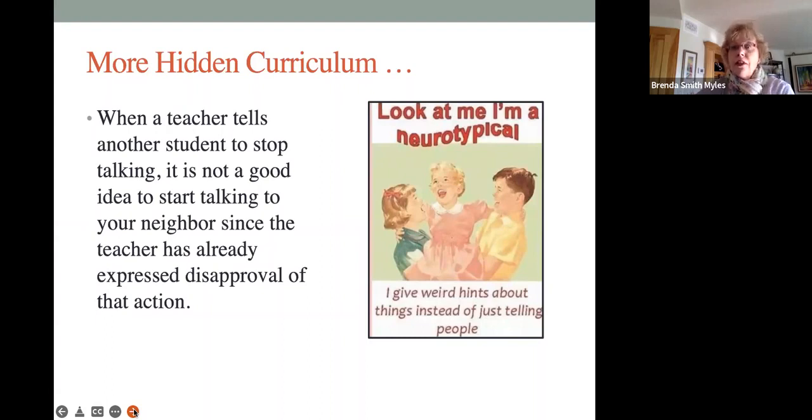When a teacher tells another student to stop talking, it's not a good idea to start talking to your neighbor since the teacher has already expressed disapproval of that action. Now, this is a tricky one. The teacher says, Molly, stop talking. Now, what does the teacher really mean? The teacher really means everyone stop talking. But our child, who is not named Molly, may continue talking or start talking. And then he gets in trouble. And what does he think? He thinks, my name's not Molly. I was not told to stop talking. This is not fair. Can you see how easy it is to misunderstand these things?